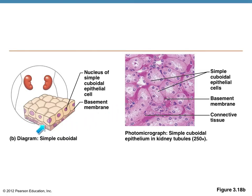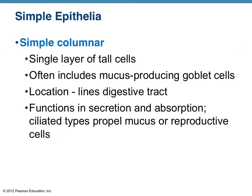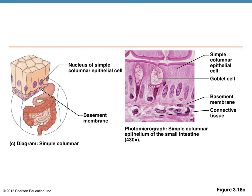Simple columnar epithelium is a single layer of tall, column-shaped cells. These are maybe a little more prevalent in the human body and found all over the place. One place they would be found is lining the digestive tract, and they could often be ciliated. Ciliated means they have little hair-like projections that are able to catch debris and propel the mucus produced by goblet cells, or propel reproductive cells if you're talking about the reproductive tract.